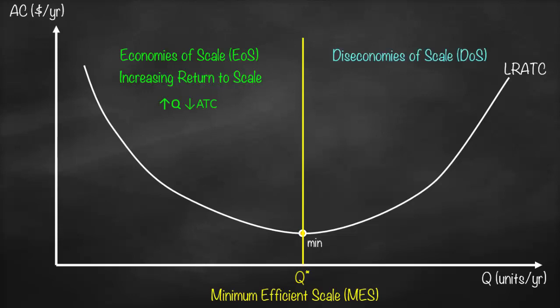On the other side, we have diseconomies of scale. Its synonym is decreasing return to scale, which means if we increase quantity, our average total cost will be higher, and that's why the long-run average total cost is upward sloped. In this case, we should decrease the quantity until we reach our minimum efficient scale.